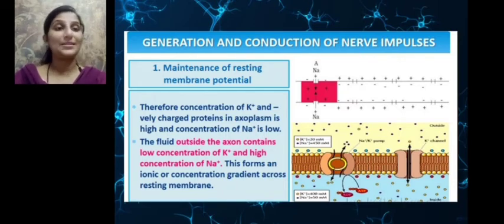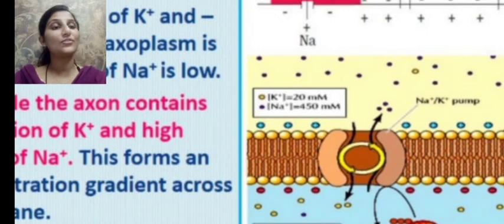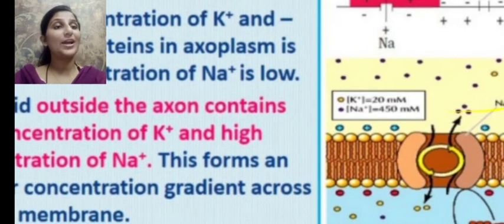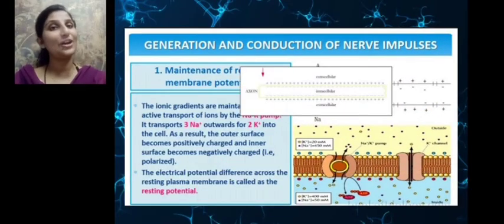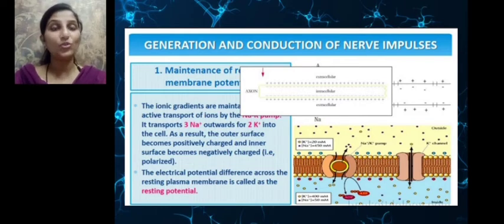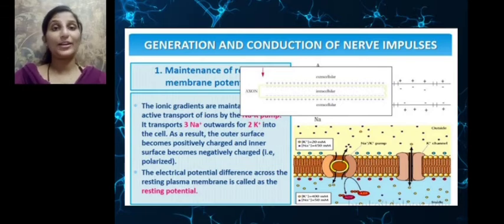In the axon, we can see there is a greater concentration of K+ and negatively charged proteins inside the axoplasm, and less concentration of sodium ions. Outside, there is greater concentration of sodium and less concentration of potassium. This ionic gradient — this difference in ionic concentration — is maintained by active transport of ions using energy, by pumps called sodium-potassium pumps. These pumps actively transport ions across the membrane, maintaining greater sodium concentration outside and greater potassium concentration inside.